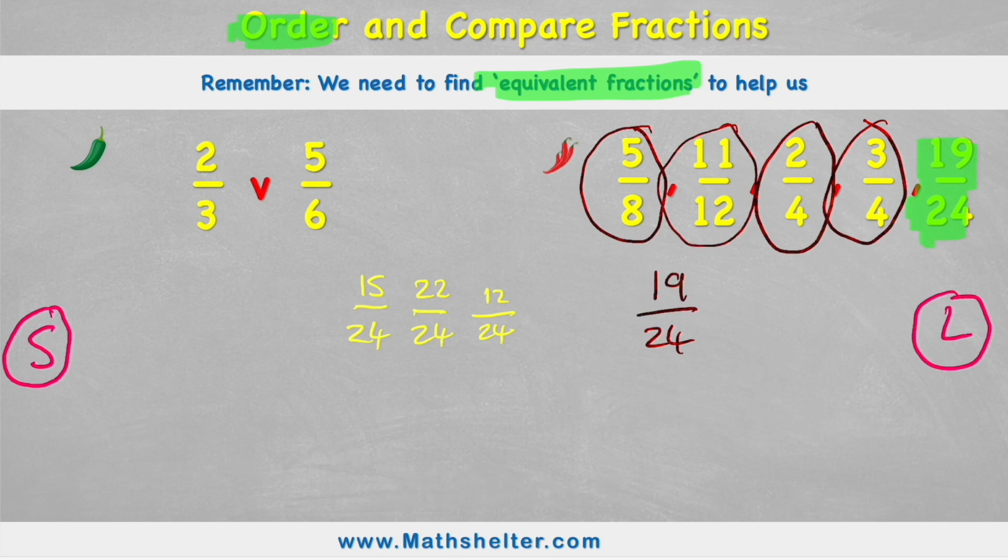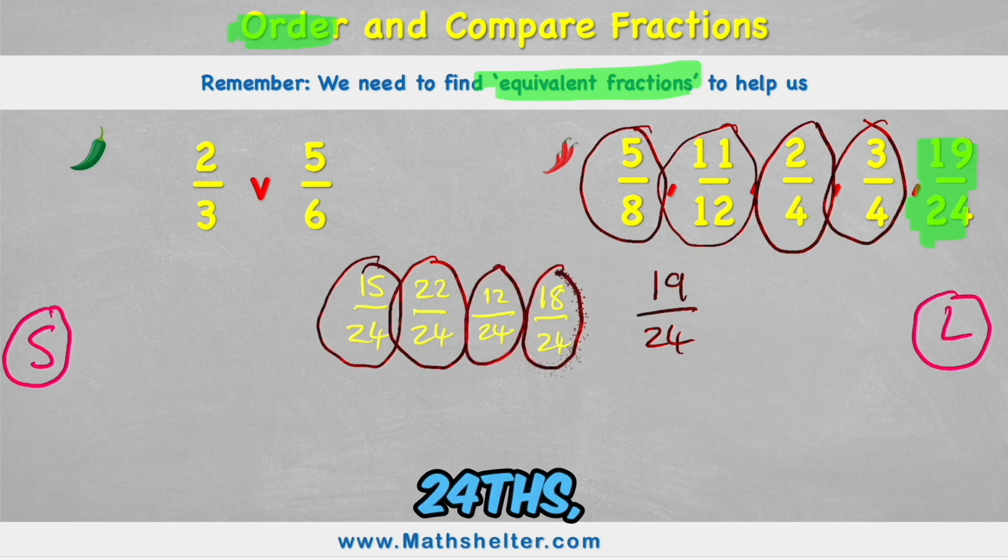And finally, my last one. 3 quarters or 3 fourths. So 3 fourths. Again, how do I get my 4 to become a 24? I need to times it by 6. So therefore, I need to times my 3 times 6 as well. 4 times 6 is 24. 3 times 6 is 18. And now I can get rid of my 3 quarters. Okay, here we go then. So my new fractions that I'm going to be able to order are 15 24ths, 22 24ths, 12 24ths, 18 24ths, and 19 24ths.